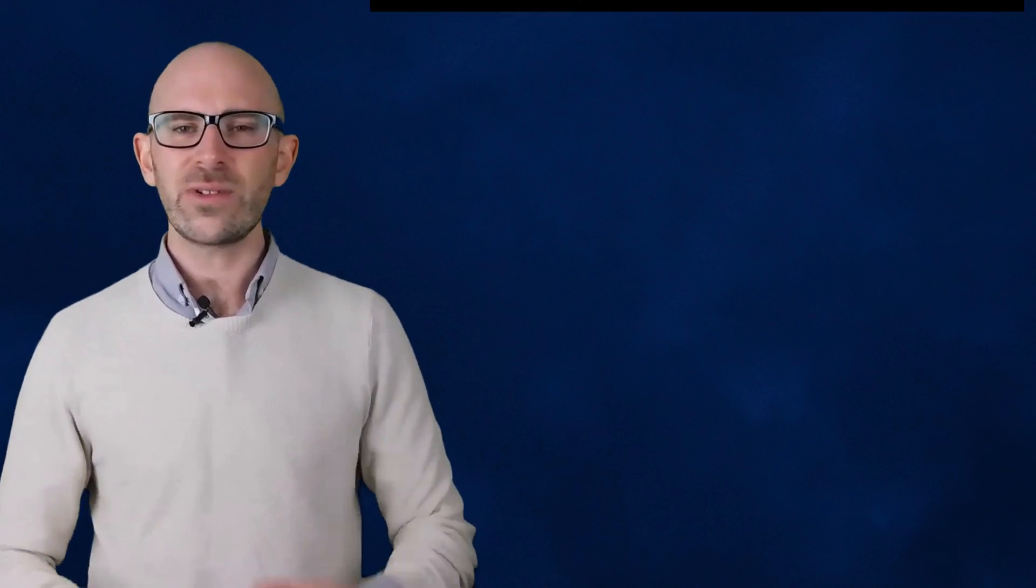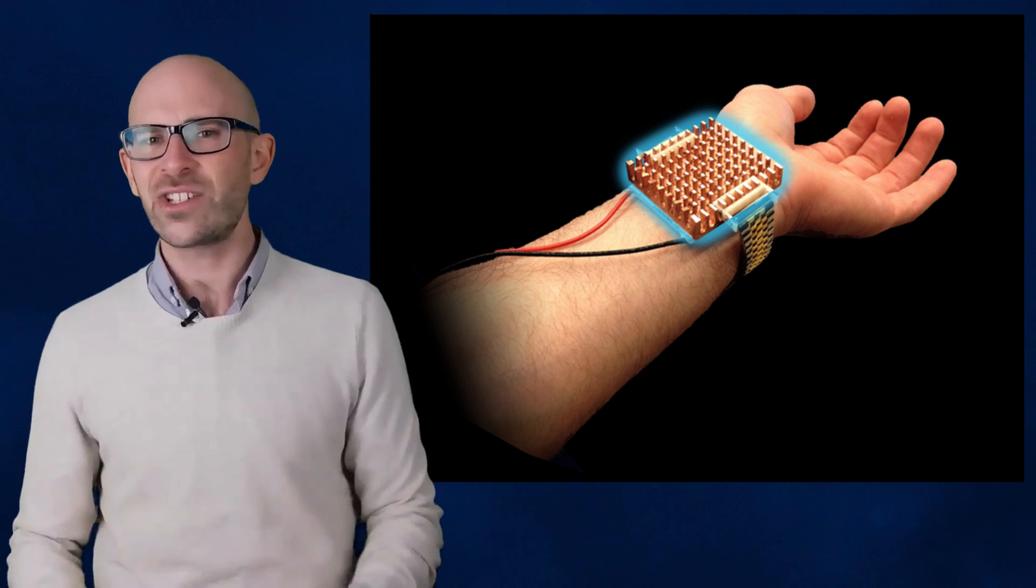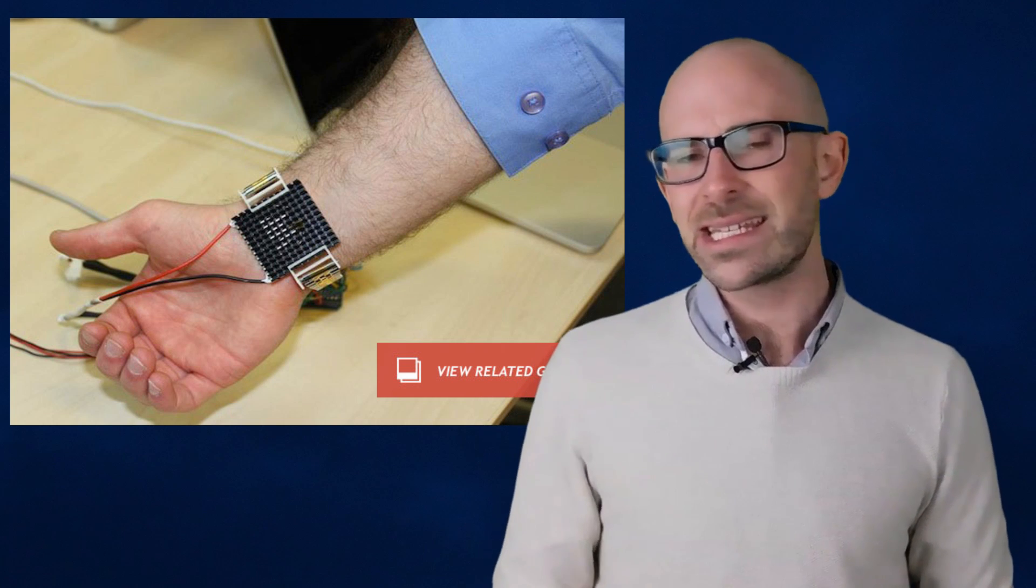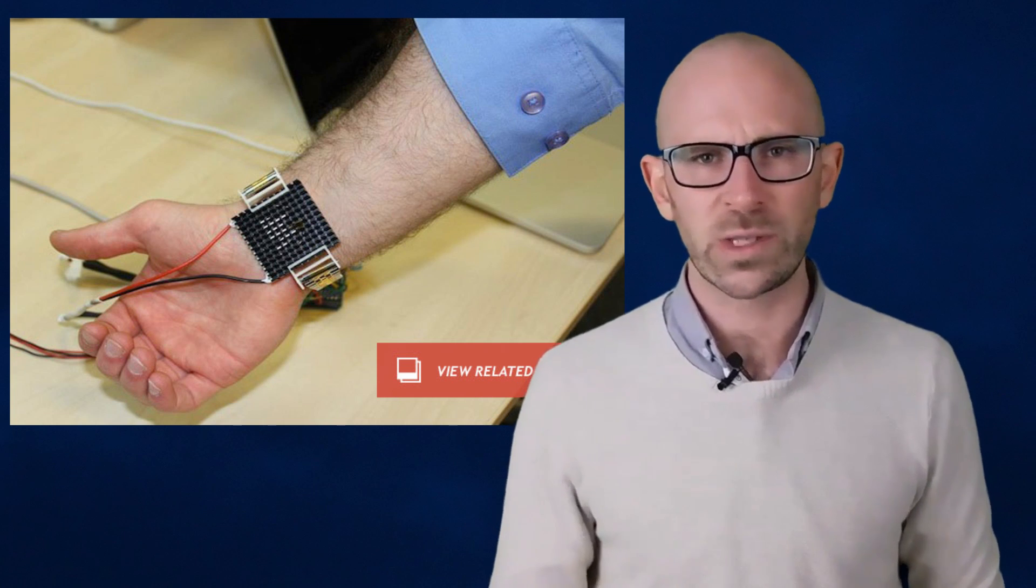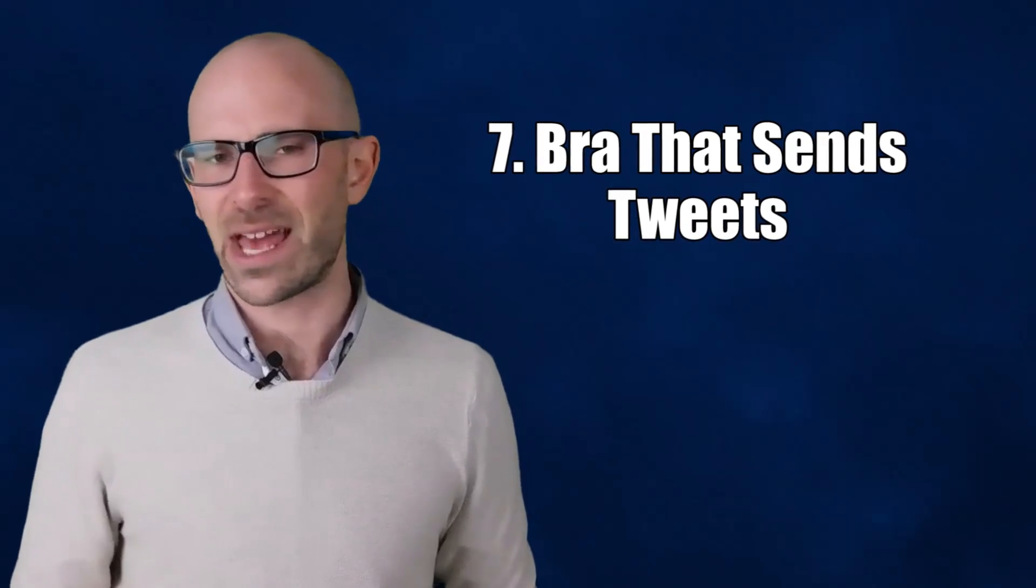Dubbed the Wristify, a trio of MIT students created a device that monitors both external air temperature and body temperature and adjusts the latter accordingly. According to one of its creators, it's constantly tricking the body into thinking it's actually really cold, forcing the body to acclimate and change its temperature. Number 7.